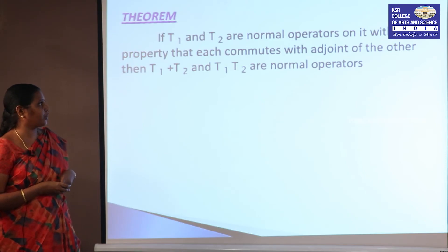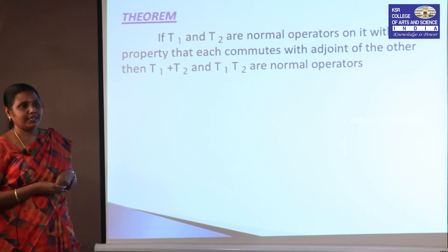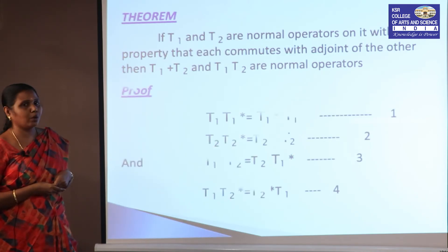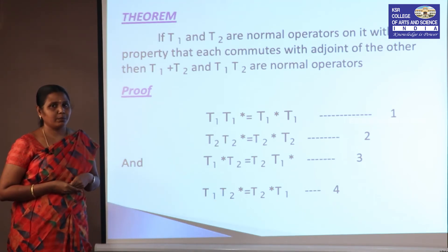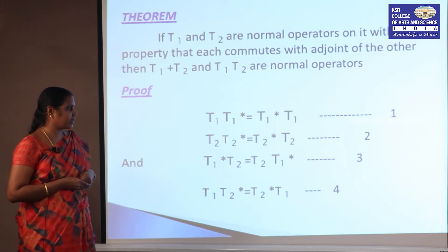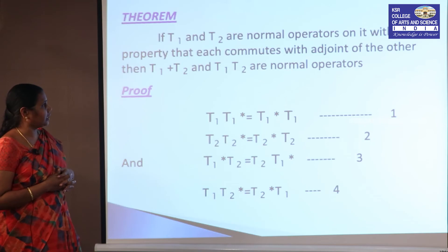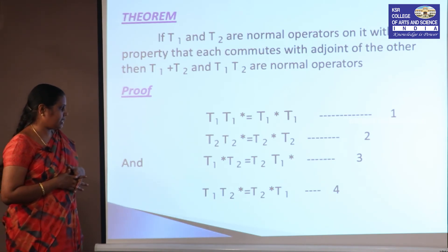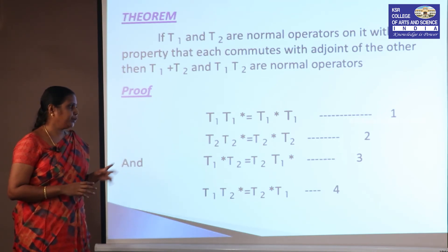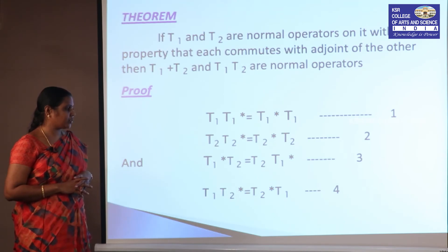Now we discuss a theorem on normal operators. Given that T₁ and T₂ are normal operators where each commutes with the adjoint of the other, we prove that T₁ + T₂ and T₁T₂ are normal operators. The given conditions are: T₁T₁* = T₁*T₁ (equation 1), T₂T₂* = T₂*T₂ (equation 2), T₁*T₂ = T₂T₁* (equation 3), and T₁T₂* = T₂*T₁ (equation 4).